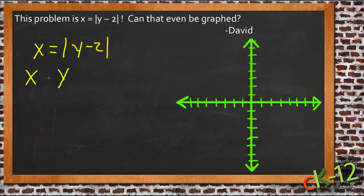If we make our x-y chart, if we were to pick values for x, then we'd have to figure out what y was so that we could subtract 2 from it and then take the absolute value of it to equal the number we chose. That sounds like the hard way around, so let's plug values in for y instead and find out what x equals.